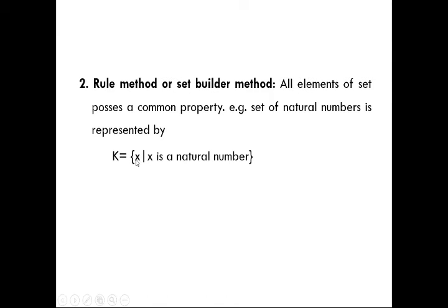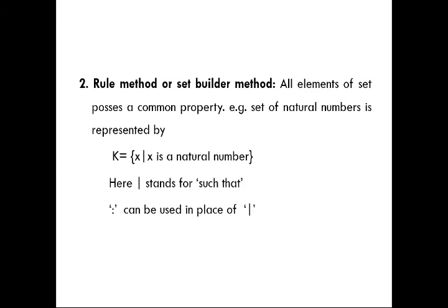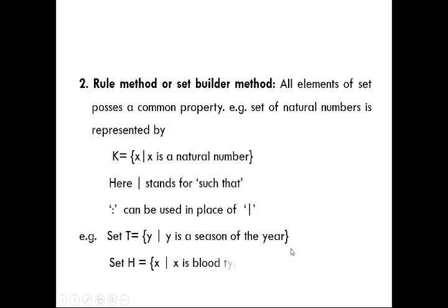The colon can also be used in place of the vertical line in some books. For example, set T = {y : y is a season of the year} — you don't have to write down the names of the seasons. Another example: the set of blood groups in set builder form would be H = {x : x is a blood type}, which automatically includes A, B, O, and AB.